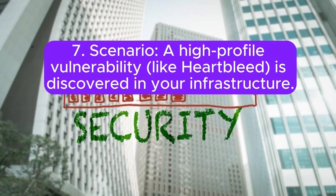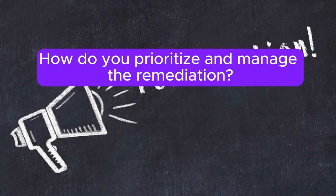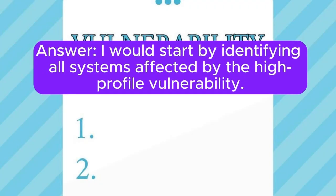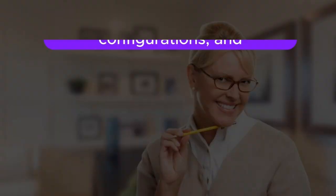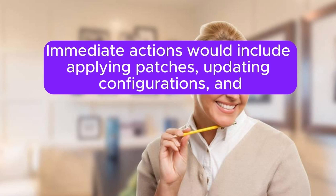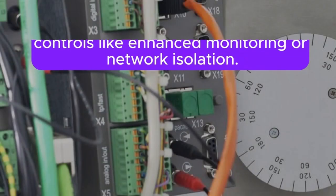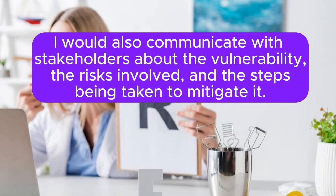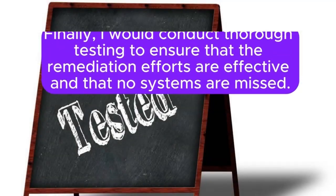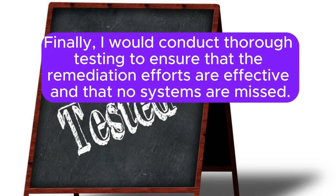Scenario 7: A high-profile vulnerability like Heartbleed is discovered in your infrastructure. How do you prioritize and manage the remediation? I would start by identifying all systems affected by the high-profile vulnerability and prioritize remediation based on system criticality, exposure, and potential impact. Immediate actions would include applying patches, updating configurations, and implementing compensating controls like enhanced monitoring or network isolation. I would communicate with stakeholders about the vulnerability, the risks involved, and the steps being taken to mitigate it. Finally, I would conduct thorough testing to ensure that the remediation efforts are effective and that no systems are missed.